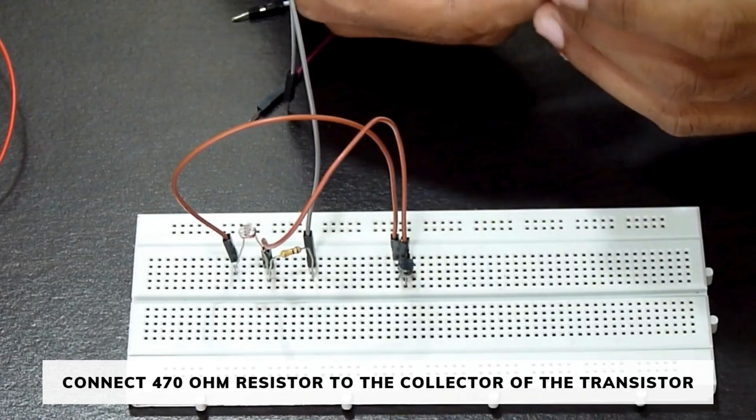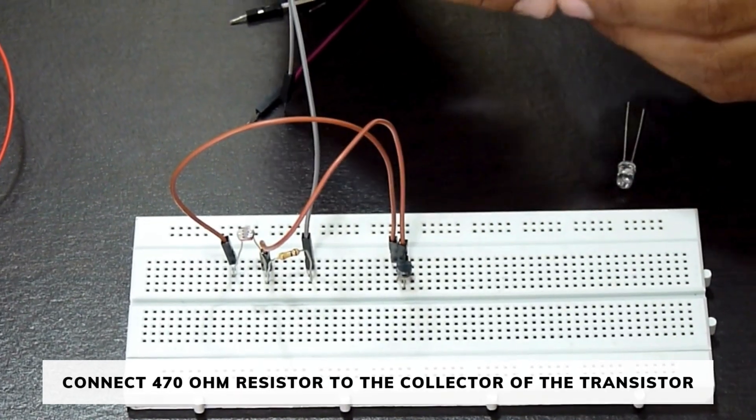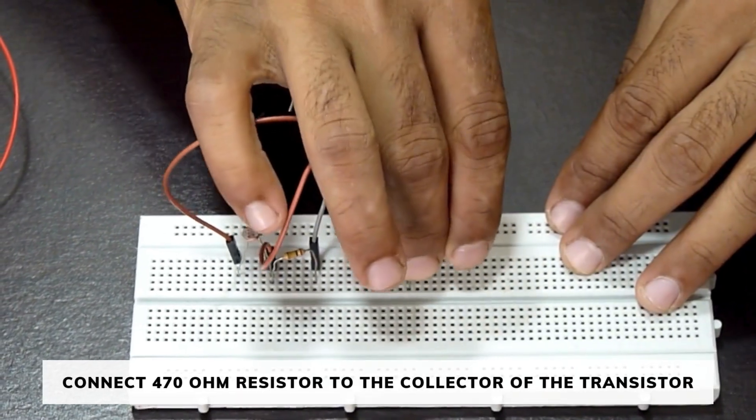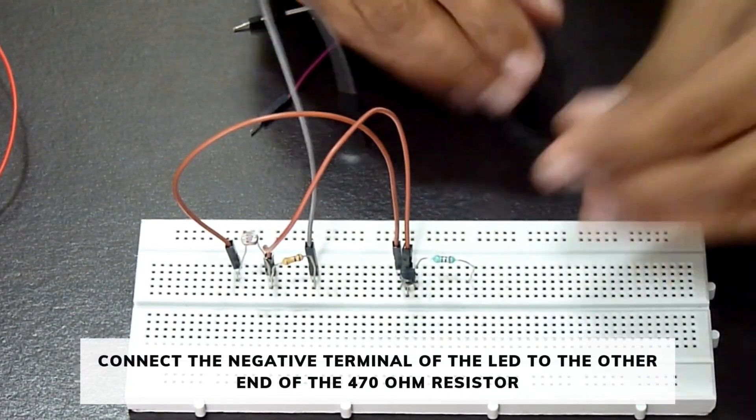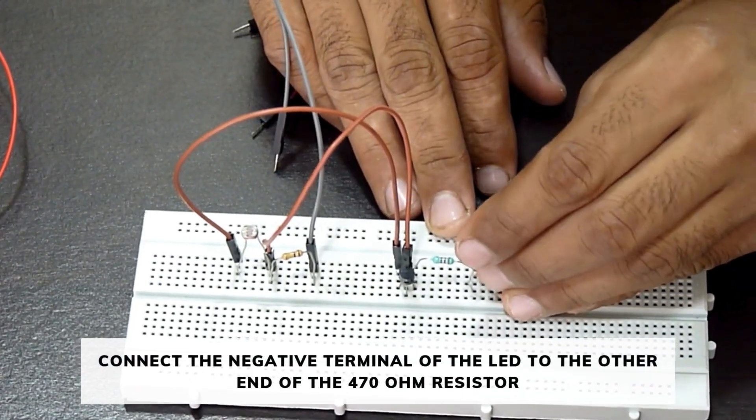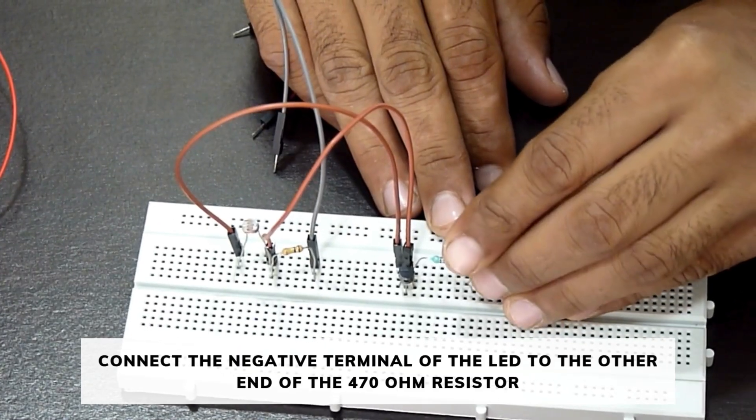Connect the 470 ohm resistor to the collector of the transistor. Connect the negative terminal of the LED to the other end of the 470 ohm resistor.